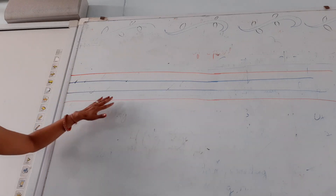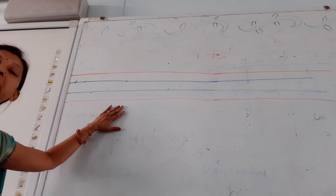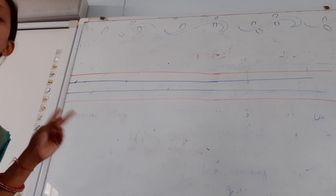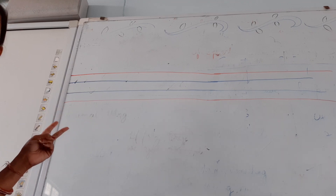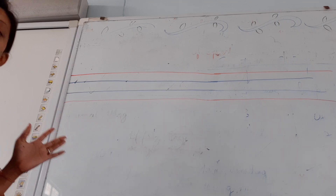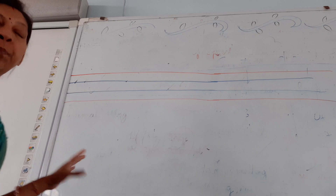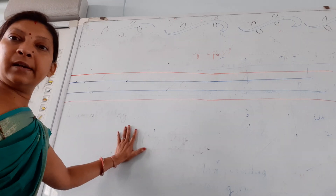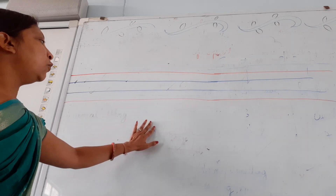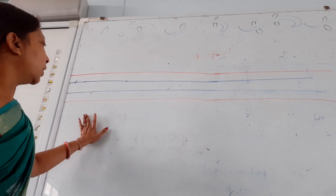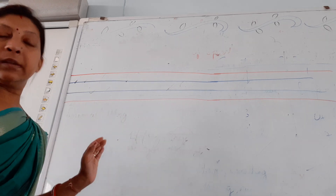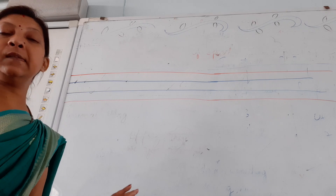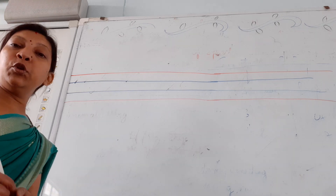Hello, good morning children! Welcome back. Now children, only two alphabets — the last two alphabets — are left for your cursive writing. I hope now it is very easy for you to write in cursive. If you watch the video, children, you must follow the steps — cursive writing step, follow the step.